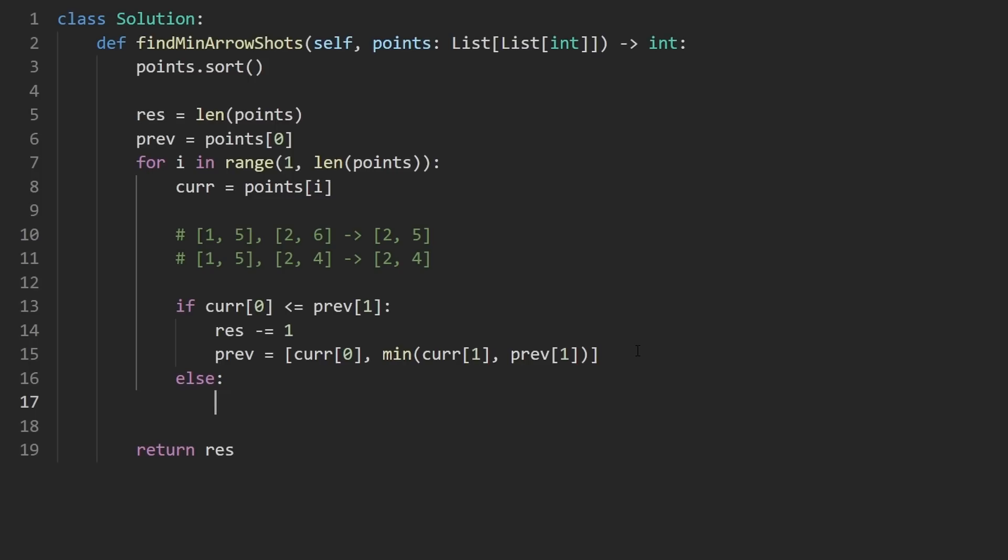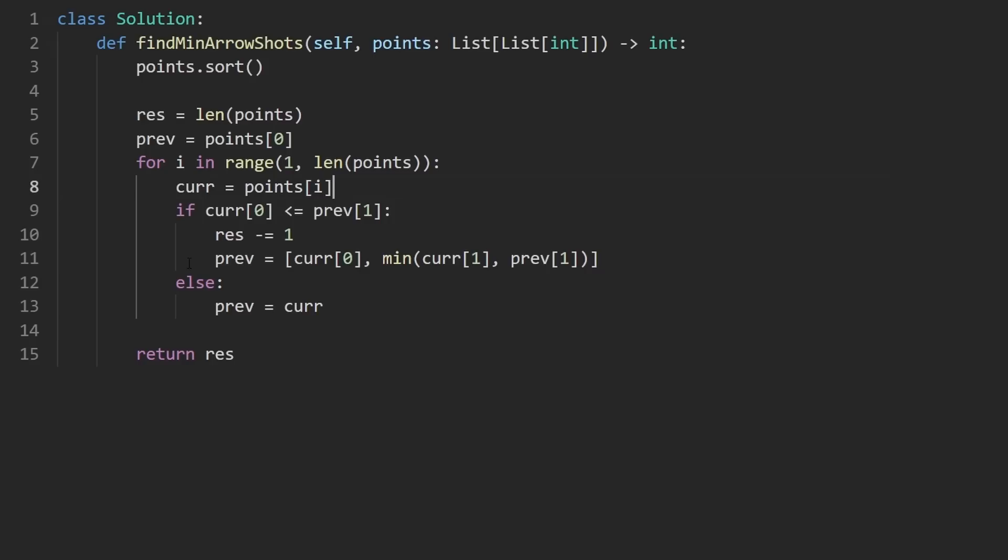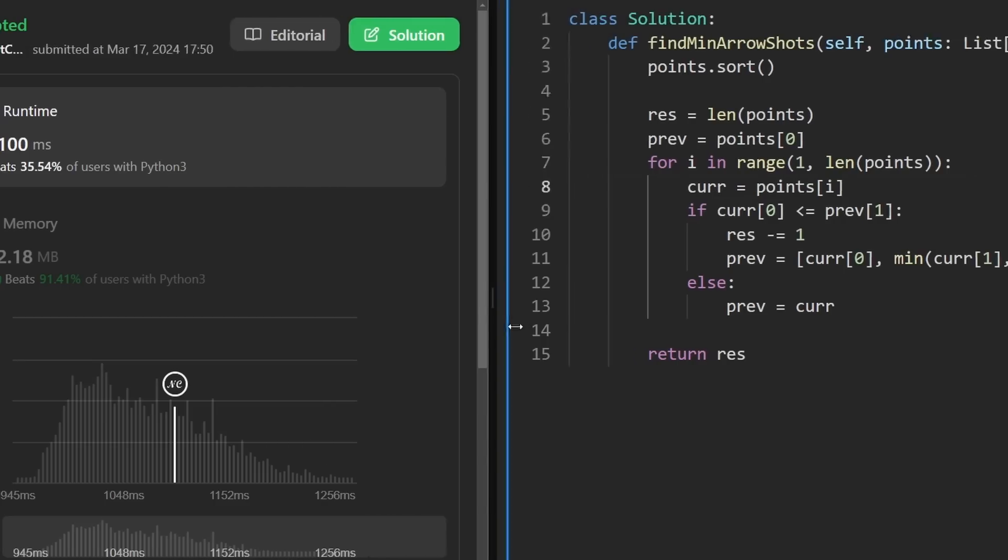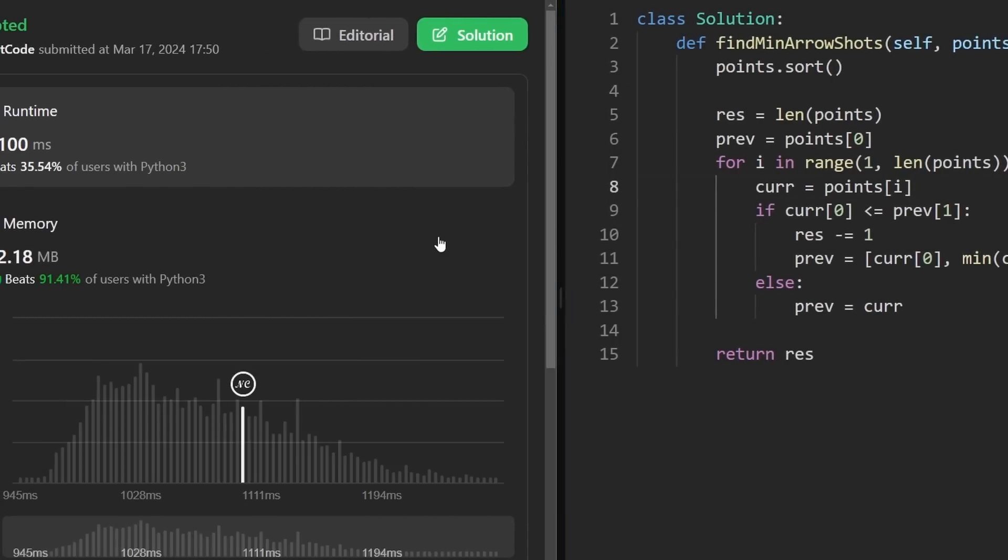What about the case where they're not overlapping? Well, we don't really do anything because we already assumed we need an arrow for every single interval over here. I guess what we do do is update previous still. We will now set previous equal to the current interval. So this is the entire code. Let's run it to make sure that it works. And as you can see, it's pretty efficient. If you found this helpful, please like and subscribe. Check out NeatCode.io if you're preparing for coding interviews. Thanks for watching and I'll see you soon.